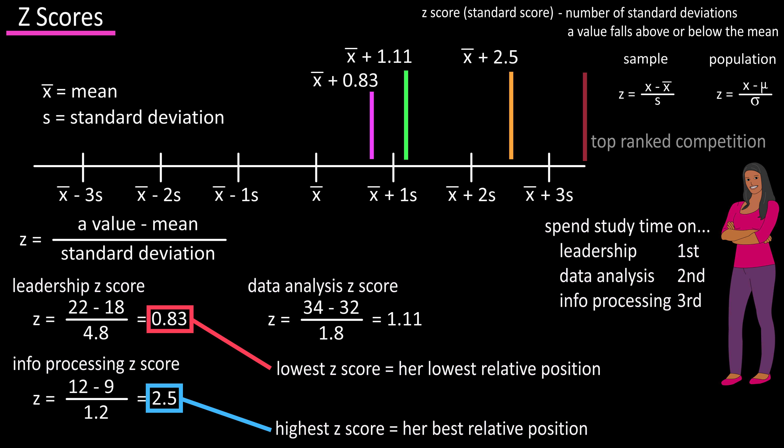If you think of the right end of the line as being the top ranked applicants, this gives you a visual perspective of her z-scores, or where she stands compared to the top tier applicants.